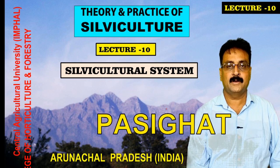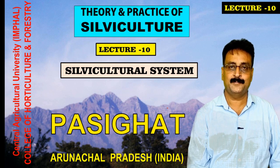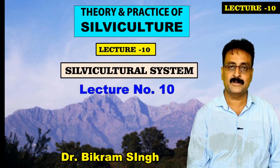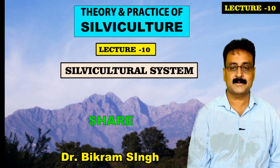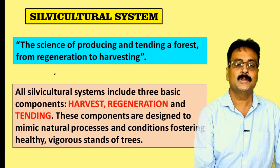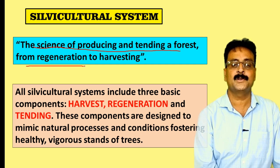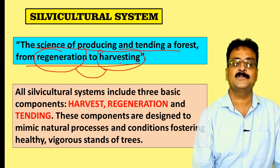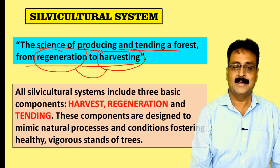This is lecture number 10 on the theory and practice of silviculture. In this lecture, I'm going to start about the silviculture system. We'll study the system of concentrated regeneration, system of diffuse regeneration, accessory system, and coppice system. First, let's understand what a silviculture system is — it is the science of producing and tending a forest from regeneration to harvesting.